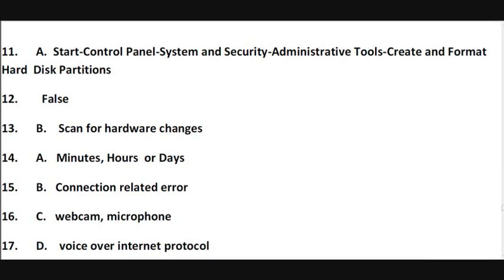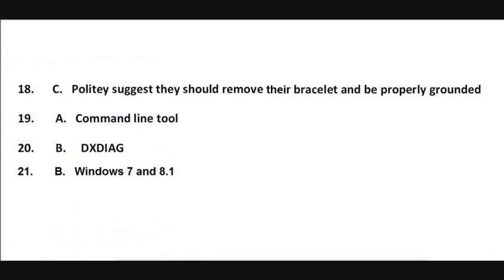Number 11 is A: Start, Control Panel, System and Security, Administrative Tools, Create and Format Hard Disk Partitions. Number 12 is False. Number 13 is B, Scan for Hardware Changes. Number 14 is A, Minutes, Hours, or Days. Number 15 is B, Connection-Related Error. Number 16 is C, Webcam and Microphone. Number 17 is D, Voice Over Internet Protocol. Number 18 is C, Politely suggest they should remove their bracelet and be properly grounded. Number 19 is A, Command Line Tool. Number 20 is B, DXDIAG. Number 21 is B, Windows 7 and 8.1.